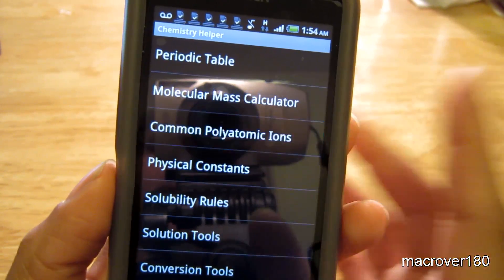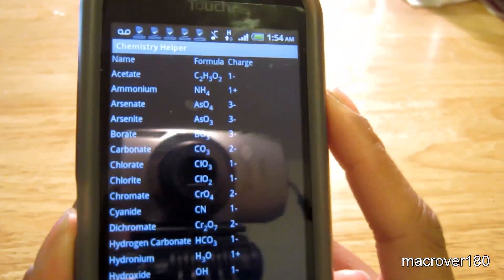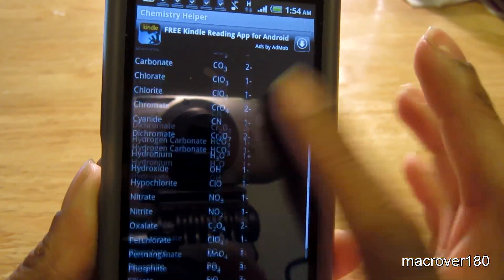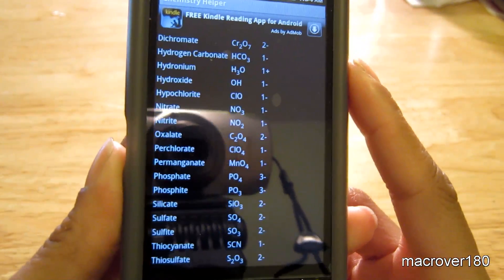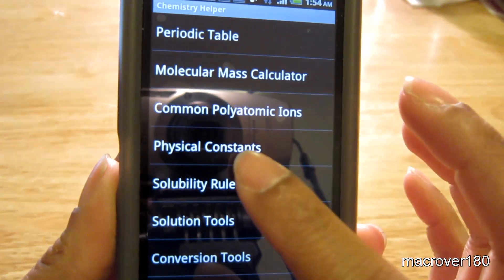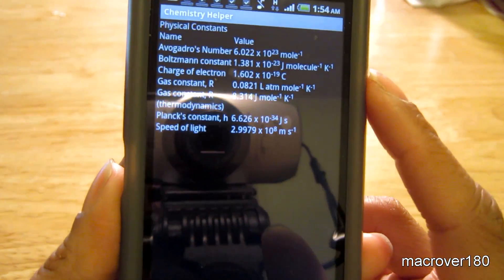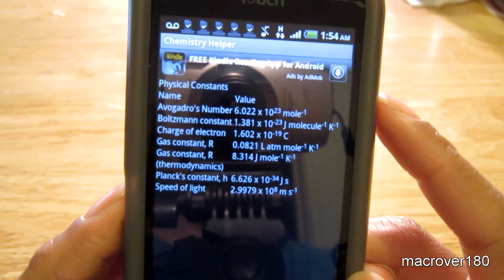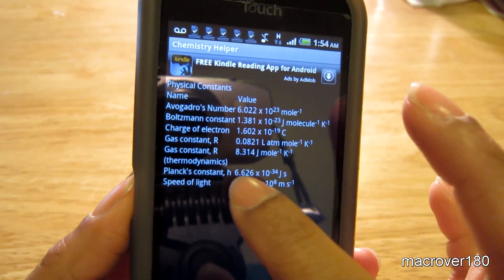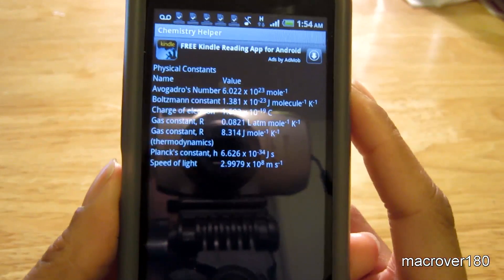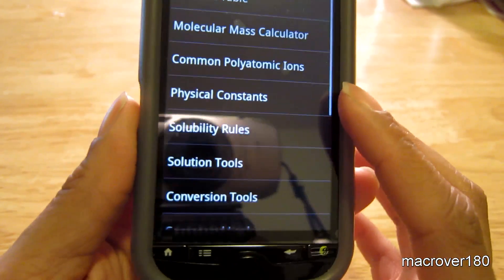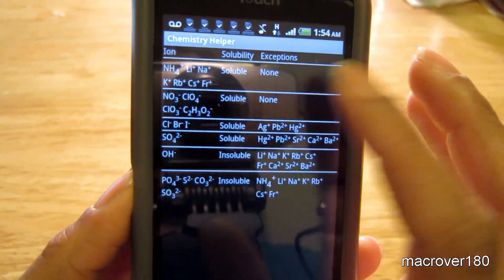List the common polyatomic ions here. You have your physical constants, the famous Planck's constant, speed of light. Solubility rules.